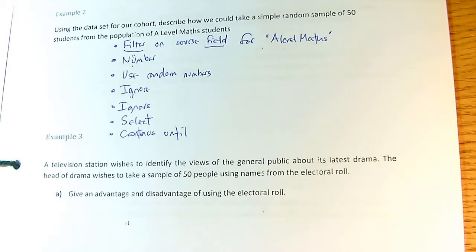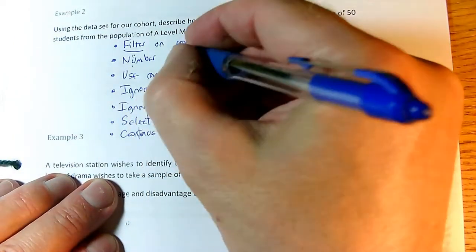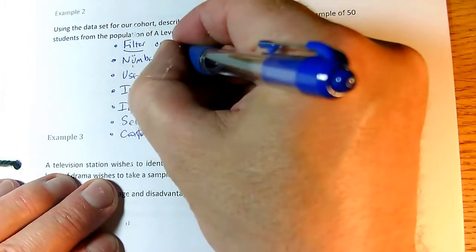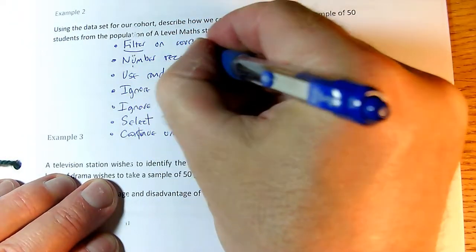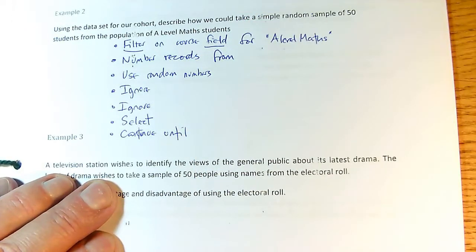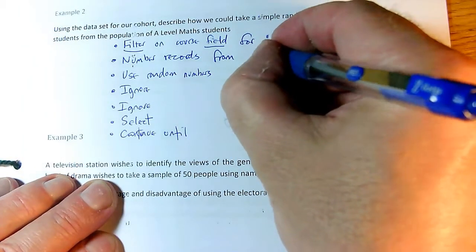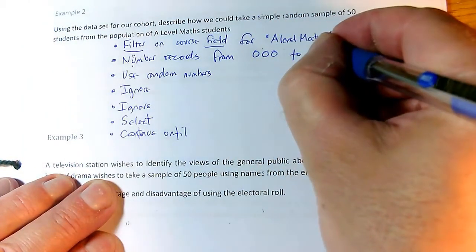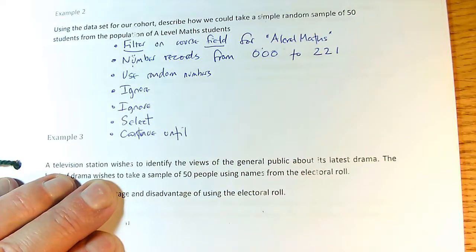Okay, so I'm assuming you've done that and you've unpaused it. So here are the answers. So we number the records from, well, you will be able to put in the exact, the proper numbers for the database you've got. I don't know how many students you've got, but let's say it's 00 to 221, or whatever the number would be.